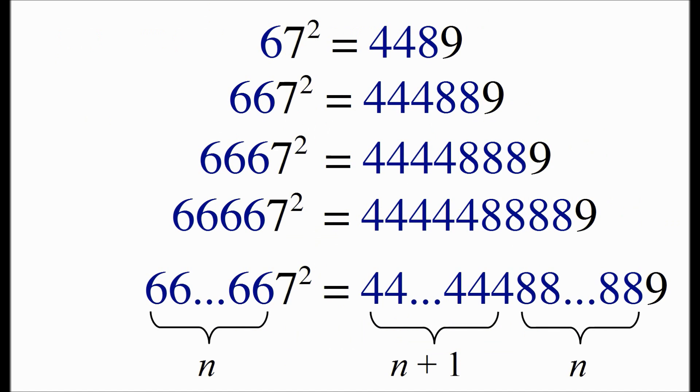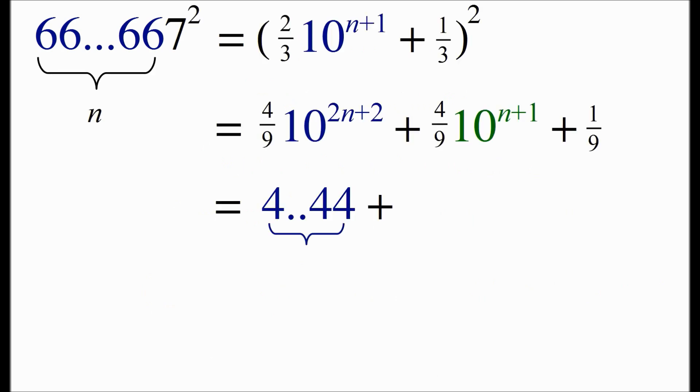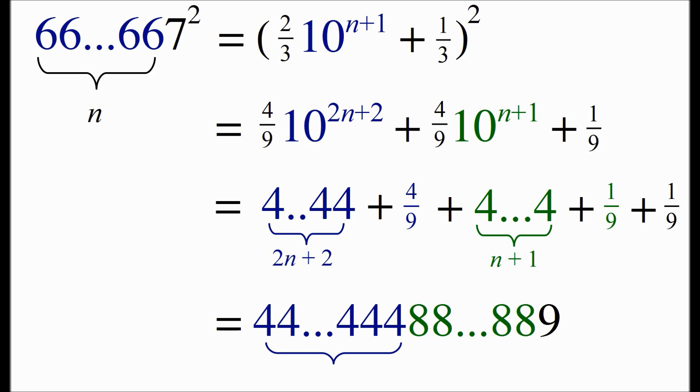We can similarly prove the formula works for a number that starts with a string of 6s and ends in a 7. I'm not going to go through the steps in detail, but it's basically the same process. You write it out in terms of fractions, and you collect the leading digits, and you're going to end up proving this pattern is correct.